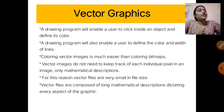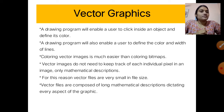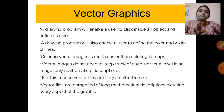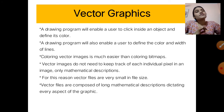Vector images do not need to keep track of each individual pixel — they only keep the mathematical description. Raster graphics keep track of each individual pixel's location and memory space. Vector files are smaller in size compared to raster graphics. Raster graphics files occupy more memory space, while vector graphics occupy smaller memory space.